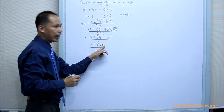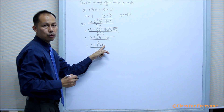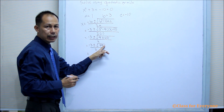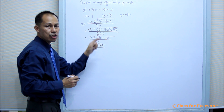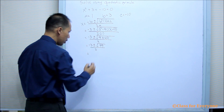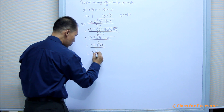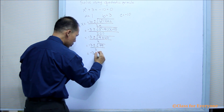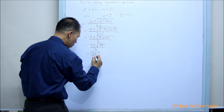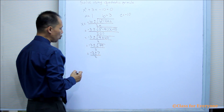Solving for the square root of 49, which is 7. So we will have negative 3 plus or minus 7, all over 2.